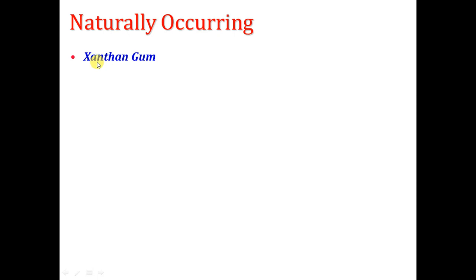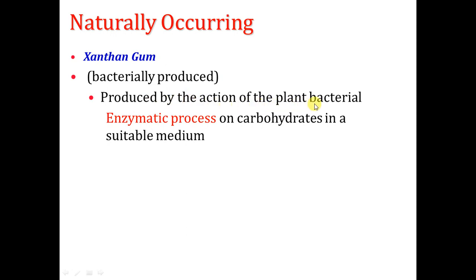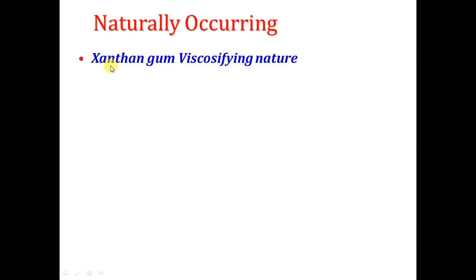Number three of the naturally occurring polymers is xanthan gum. It is the most common viscosifier in water-based mud. Its trade name may be XC polymer, Barazan, Duvis, or other names depending on the manufacturer. It is bacterially produced — produced by the action of a plant bacterial enzymatic process on carbohydrates in a suitable medium.